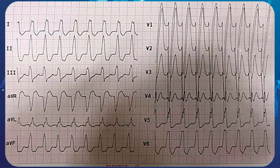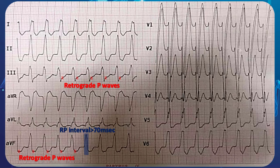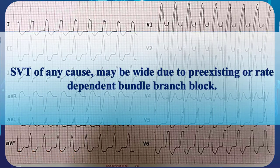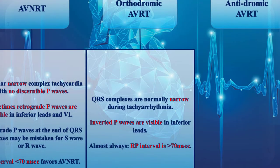This is the EKG tracing from the very beginning of the video. It demonstrates orthodromic AVRT with LBBB. There are retrograde P-waves in inferior leads with an RP interval greater than 70 milliseconds. Thanks to left bundle branch block, the QRS complexes are obviously wide, making orthodromic AVRT the most probable diagnosis. Remember that SVT of any cause may be wide due to pre-existing or rate-dependent bundle branch block.